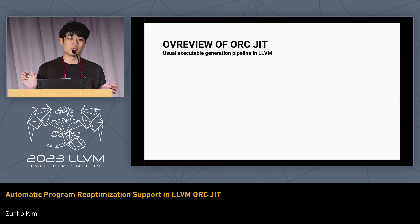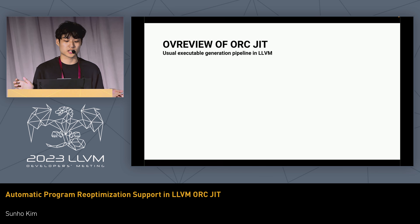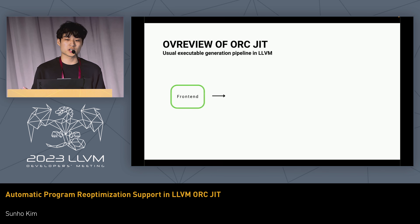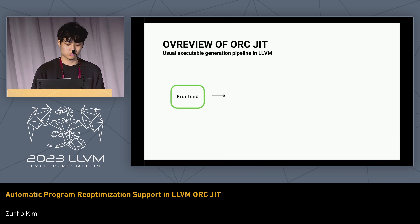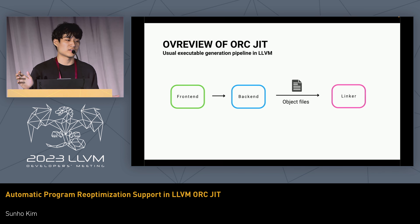Before going deep into this, I want to give you a brief overview of ORC JIT. In order to understand what ORC JIT is doing to transform LLVM into this compiler, we want to look at the user executable generation pipeline. In that pipeline, we have a frontend which emits the IR Module, and a backend that emits object files. Then we have a linker that links the object files into one single executable.